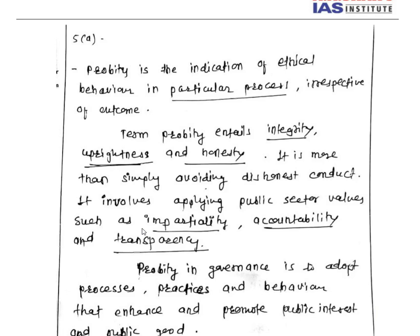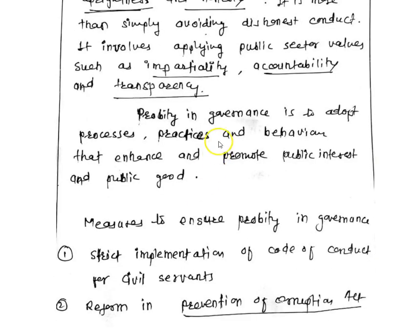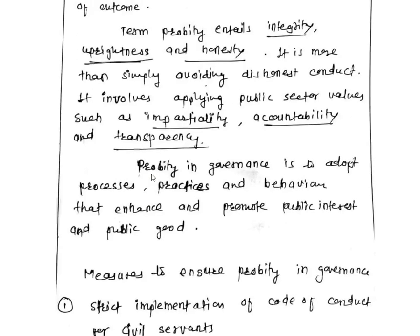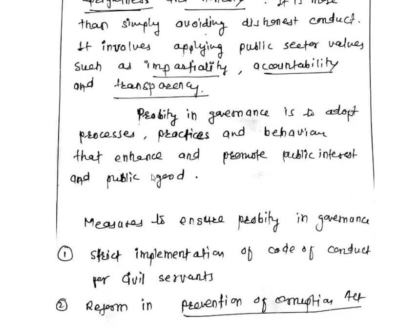Because the process should be right and transparent, that will promote good governance. Probity in governance is to adopt processes, practices, and behavior that enhance and promote public interest and public good. To ensure probity in governance, we should strictly implement the code of conduct for civil servants.